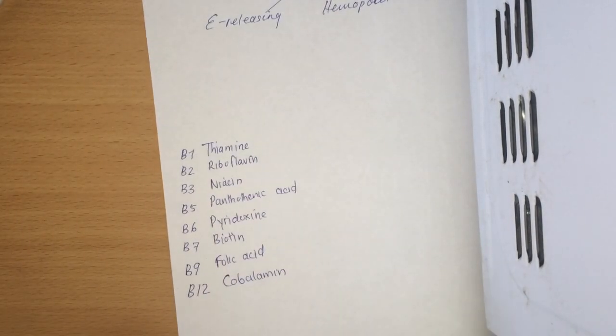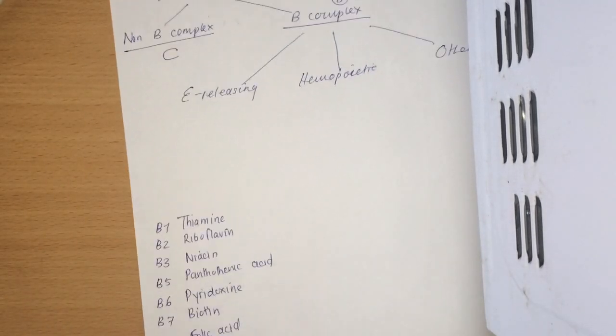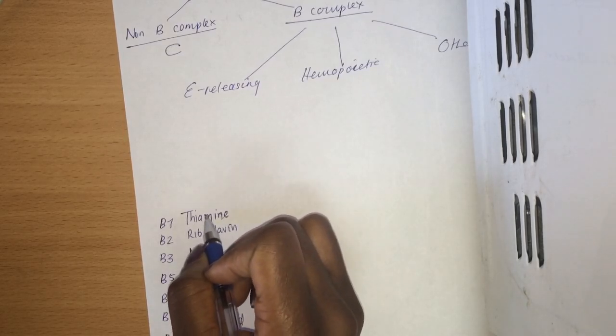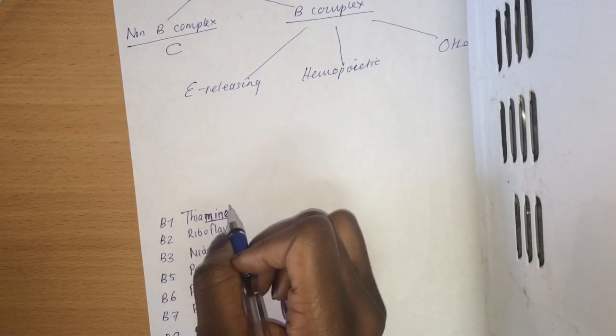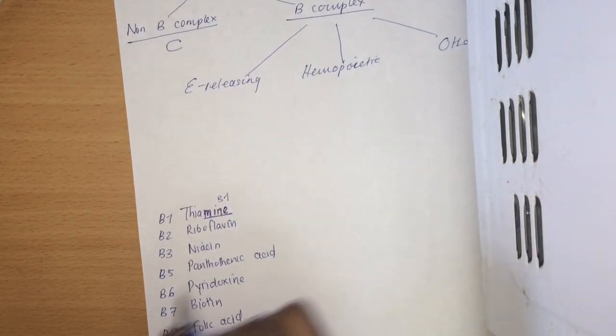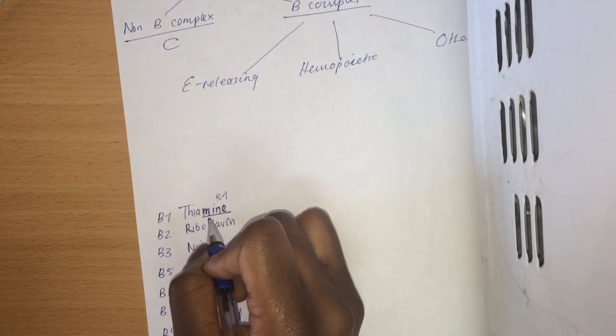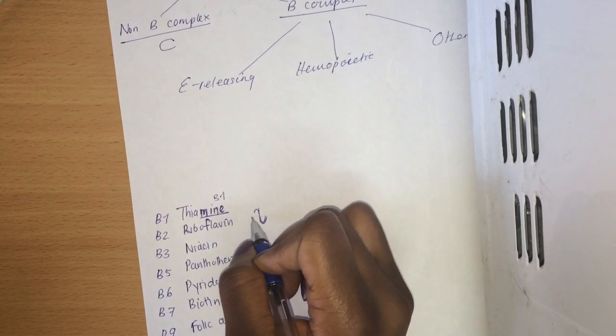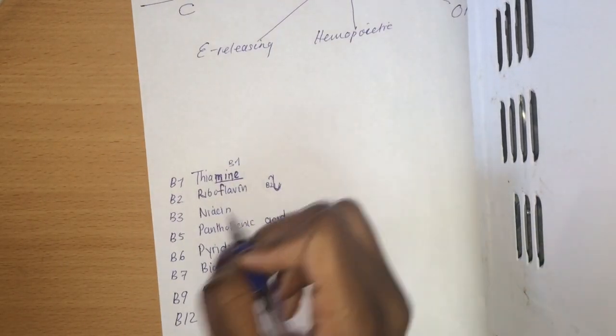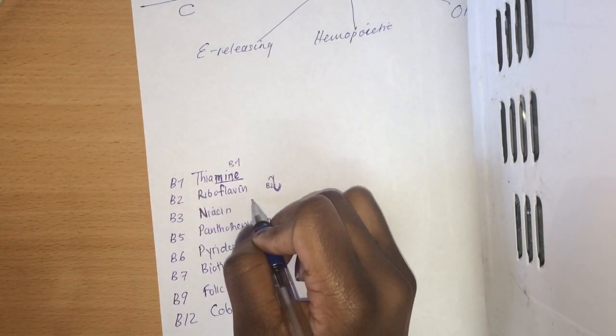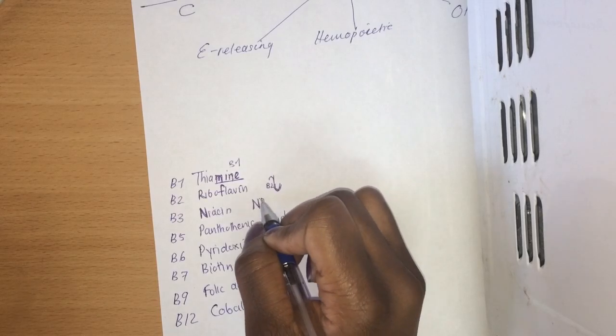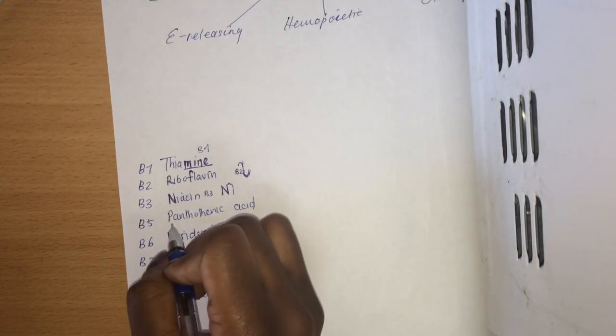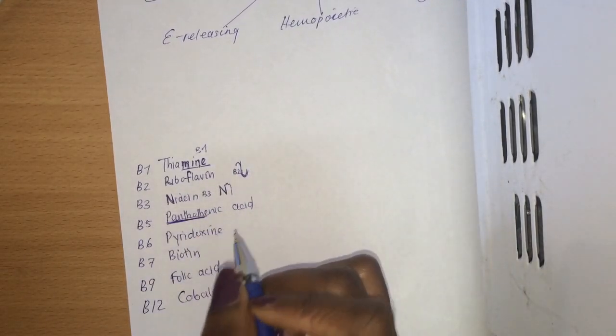Now how do you remember what name goes for what number? Here's a method I usually take. For thiamine I take the keyword mine. If it's mine it's only for one person, so it's B1. Riboflavin, I take the R and the F, and if I join R and F it gives me a two, so riboflavin is B2. Niacin, I take the N. If I take the N and I complete it, it will give me a three, so niacin is B3. Pantothenic acid, panther is a black cat. A cat has five paws, so obviously pantothenic acid is B5.